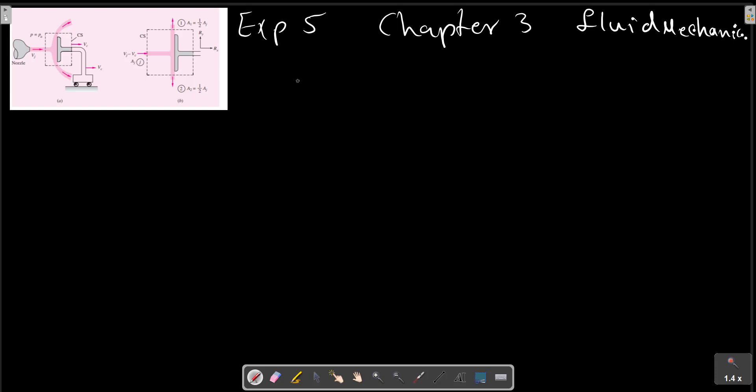A water jet of velocity VJ impacts normal to a flat plate that moves to the right at velocity VC. This device has a water jet impinging on the flat plate with VJ, the water jet velocity, and the velocity of the device is VC in the right hand side.